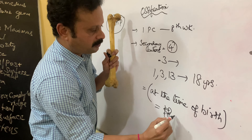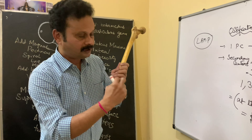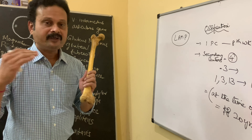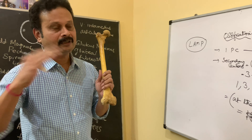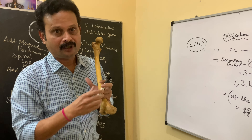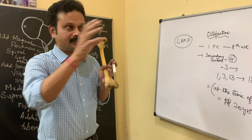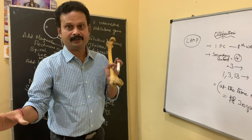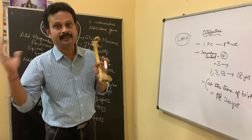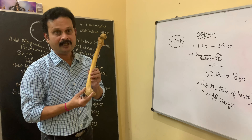The lower end secondary center fuses with the shaft at twenty years. The importance of this ossification center is that it detects the viability of a child. In medico-legal cases where there is a dispute about whether a child was born alive, an X-ray of the child's knee is taken to see whether the secondary center has appeared. If it has appeared, it indicates the baby was alive at the time of delivery; if not, intrauterine death may have occurred.